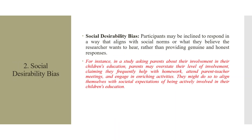Social desirability bias occurs when participants are inclined to respond in a way that aligns with social norms or what they believe the researcher wants to hear, rather than providing genuine and honest responses. For instance, in a study asking parents about their involvement in their children's education, parents may overstate their level of involvement, claiming they frequently help with homework, attend parent-teacher meetings, and engage in enriching activities — doing so to align with social expectations.